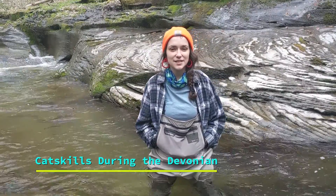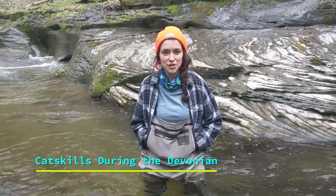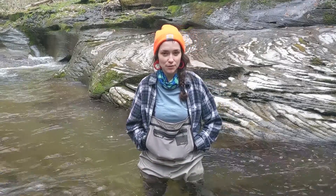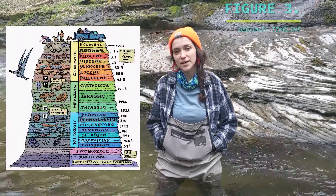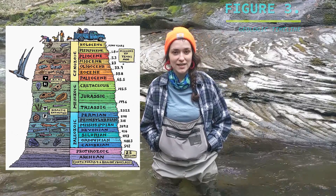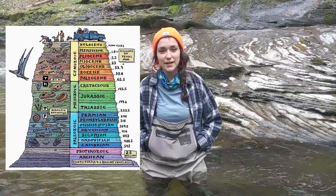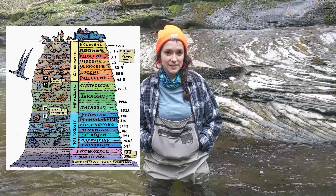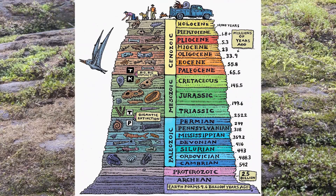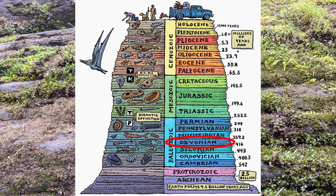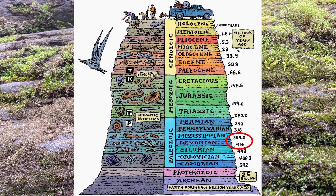The story of Catskill streams begins about 380 million years ago during what geologists refer to as the Devonian Period. Geologists organize the history of the Earth from the planet's formation to the present day into a geologic time scale. The geologic time scale you see here is organized by segments of time referred to as periods. The Devonian Period, which is the period we'll be talking about in this video, spans from roughly 420 to 360 million years ago.